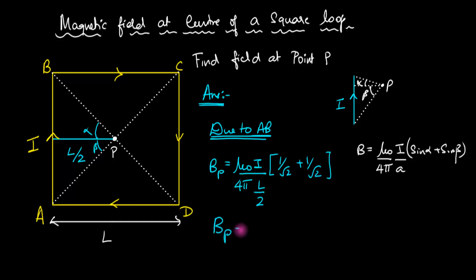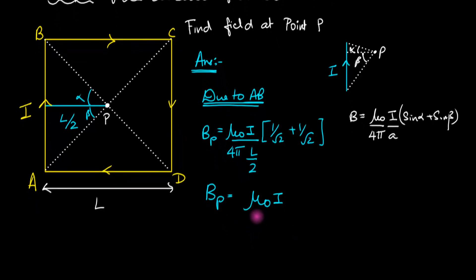That gives us (mu0*I)/(2pi*L) times 2/√2. The 2 cancels, so we get mu0*I/(√2*pi*L). That's the magnetic field due to one particular wire.